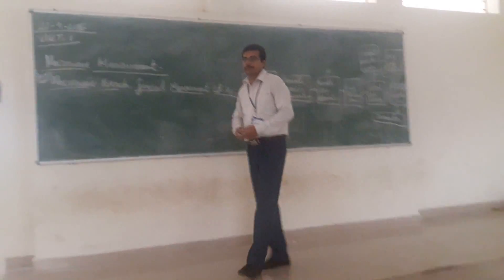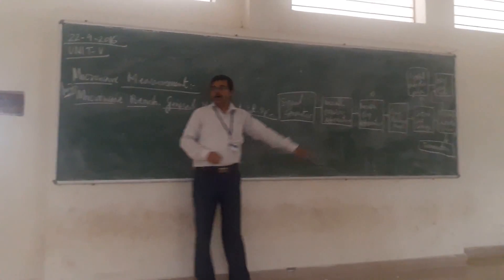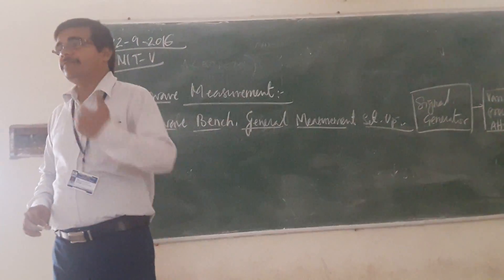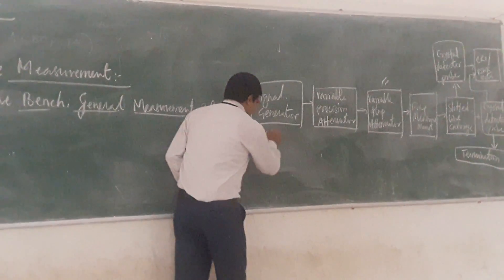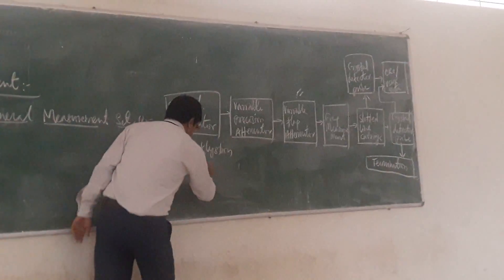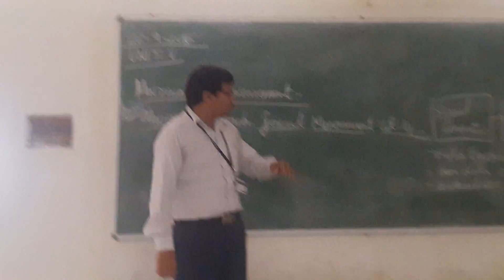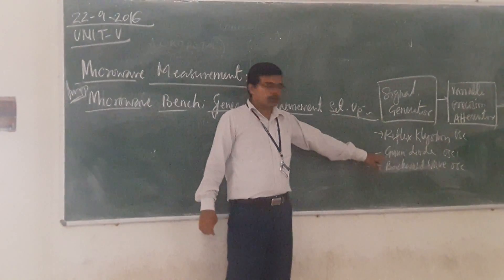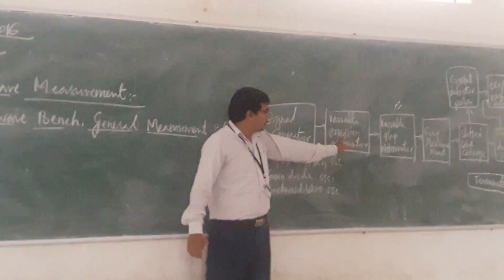This is the General Preservator setup. First, you are giving the signal generator, which generates the required microwave frequency. You can have the Gun Diode, and all these will generate the microwave frequency signal. Either you can go for your Gun Diode or you can go for your backward wave oscillator — these are generating the required microwave frequency.